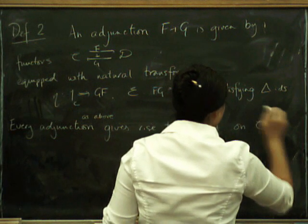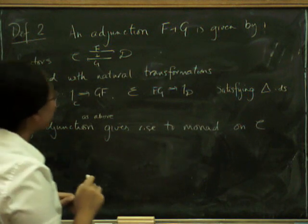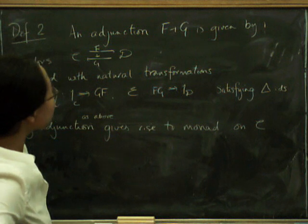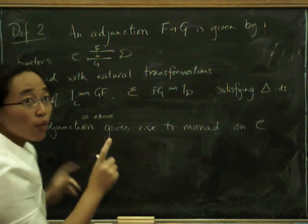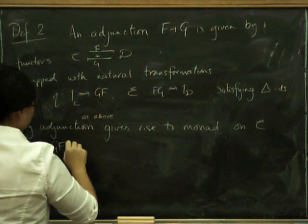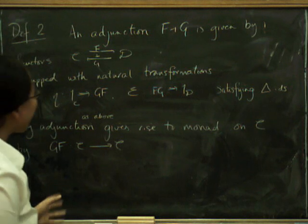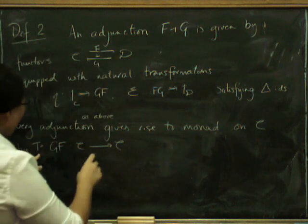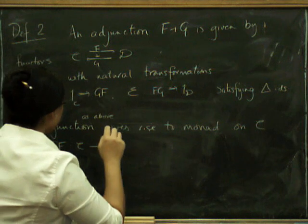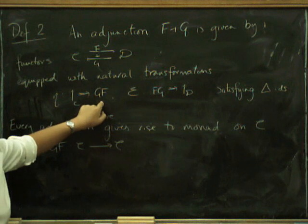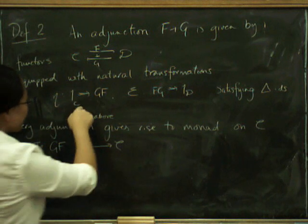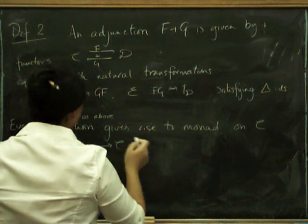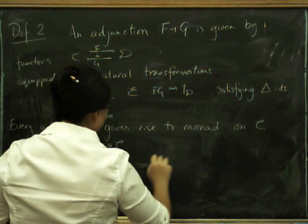What's the functor going to be? We've got category C and we want a functor from C to C. The natural choice is: do F and then do G, which I write as GF. Let's call that T, since that's what we were always calling our monads. We need a unit that goes from the identity on C to T. Well, T equals GF and we've already got a unit that goes from the identity on C to GF. So the unit is going to be eta, as before — from the identity to T, which is GF.